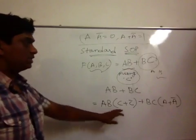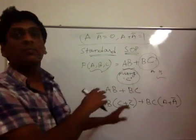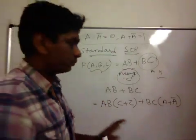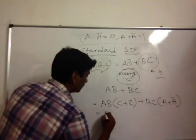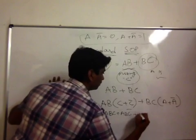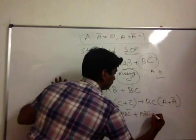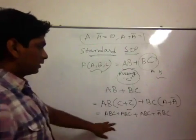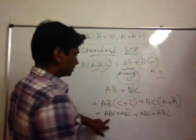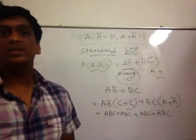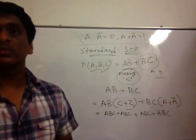Right? Now, this is one step away from standardization of SOP. Now, I can write it as ABC plus ABC bar plus ABC plus ABC. Now, if you notice, ABC and ABC are there. ABC plus ABC is ABC. Which is very simple. You can just verify that for yourself. It's just like A plus A is A.